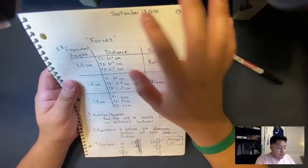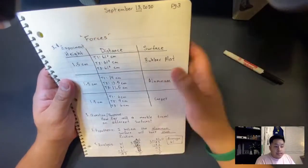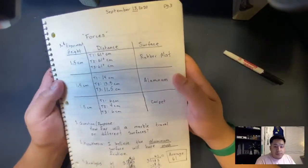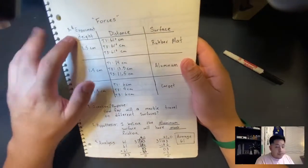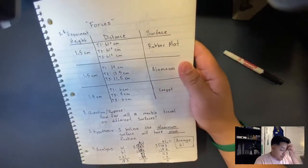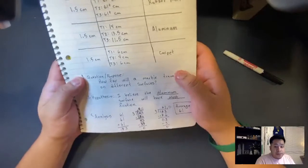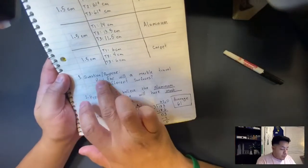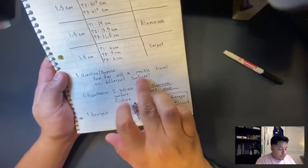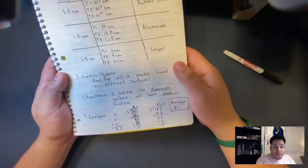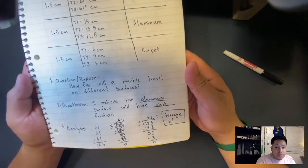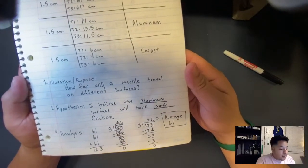Write your date, page, and then the title forces as well. What you're going to do is, I know this one says number three. Go ahead for the first time, do your question, the purpose, how far will a marble travel on different surfaces? And that is what the experiment, that is what we're going to be talking about today.